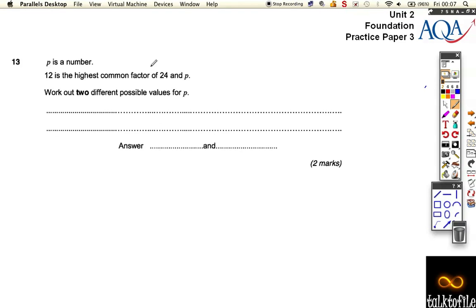Okay, so we've got p is a number and 12 is the highest common factor of 24 and p. That means 12 is the biggest number that goes into 24 and p. Work out two different possible values of p.